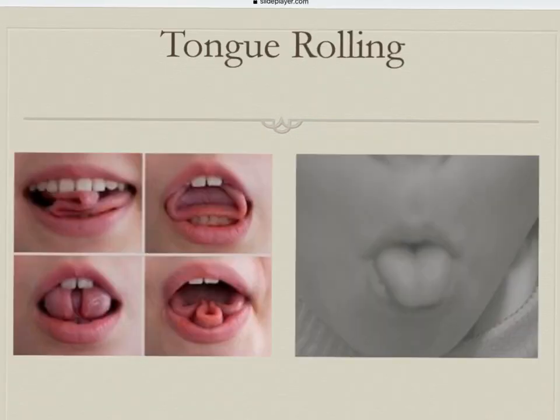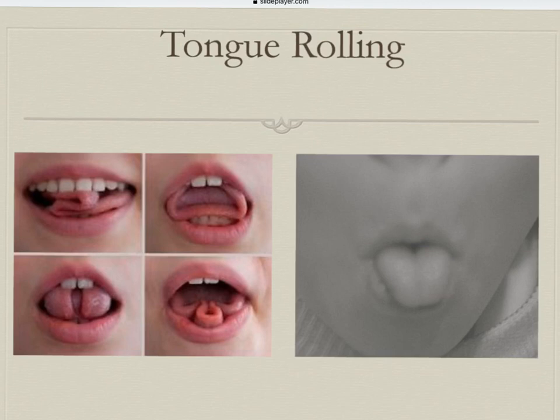The next trait is tongue rolling. Tongue rolling is a dominant gene — the ability to roll is dominant on the left, and not being able to roll is recessive on the right. Go to page 9 and check your phenotype. Either you can tongue roll or you're a non-tongue roller, and put your genotype. If you're a tongue roller, you are at least one capital R, and then the other allele is based upon your parents. If you are a non-tongue roller, you have to be little r, little r, because it's recessive.